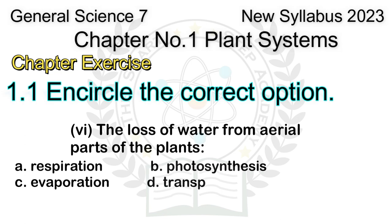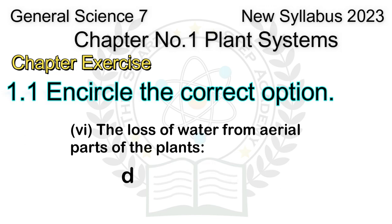Question 6: The loss of water from aerial parts of the plants is called: A. Respiration, B. Photosynthesis, C. Evaporation, D. Transpiration. Answer: D. Transpiration.